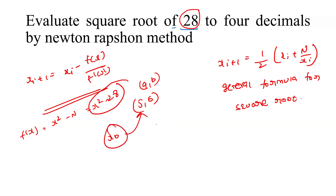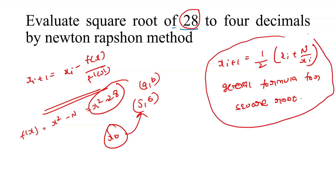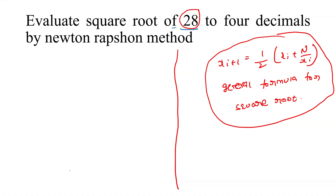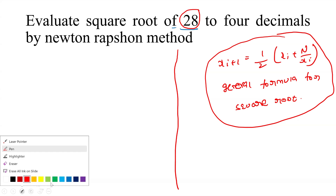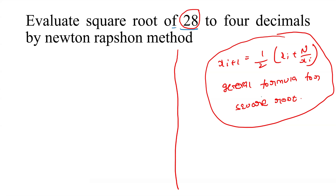For now, I am using the general formula for the square root: x_{i+1} = (1/2) * (x_i + n/x_i). We know that the square root of 28 lies between 25 (which is 5²) and 36 (which is 6²).